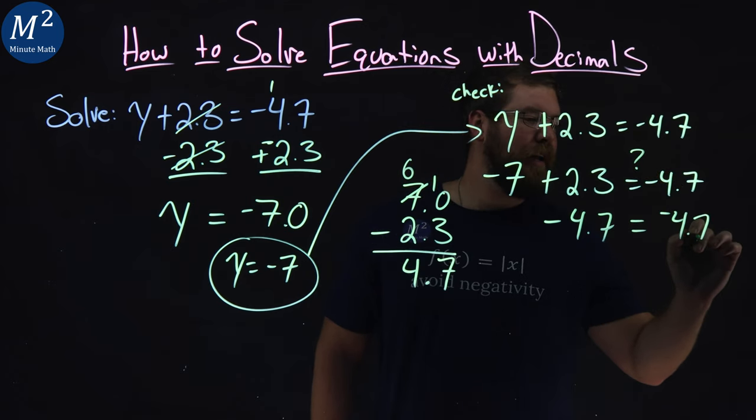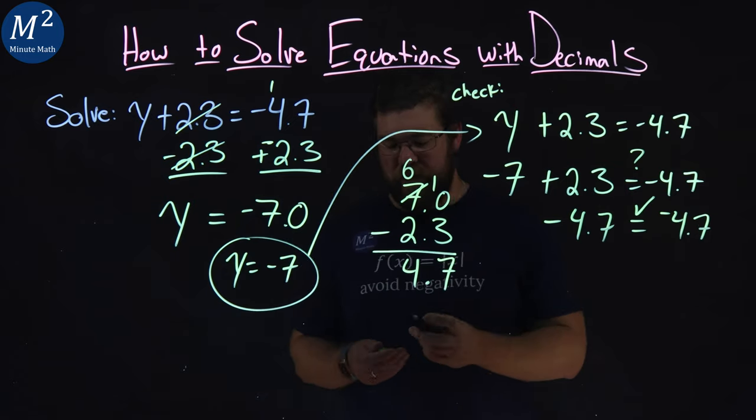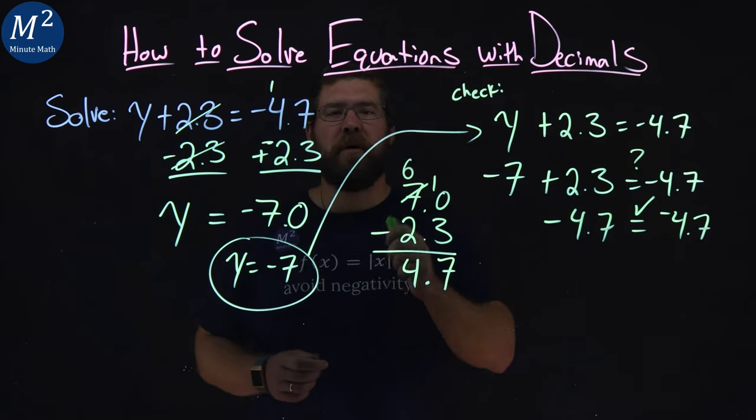And are our left and right-hand side equal? Yes, they are. Confirming that y equals negative 7 is a solution to our equation.